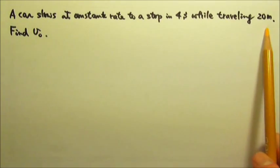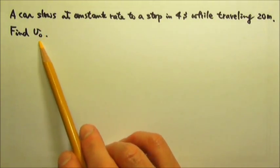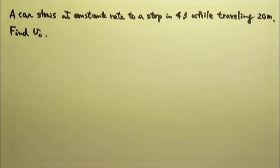This is a constant acceleration motion problem. So if we want to find the initial velocity, we just need to know three things. Can we list the three things we know?